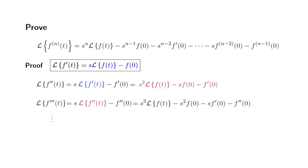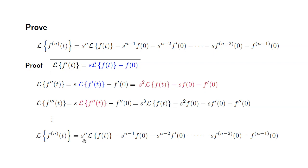For the n-th derivative, it starts with s to the n-th power times the Laplace transform of f of t, then the powers go down one by one all the way to one. All the subsequent terms have a negative sign. You start with f of 0, then f prime of 0, f double prime of 0, and so on, with the last term being the n minus first derivative of f of 0. That's the exact formula shown at the top. I hope this was clear.